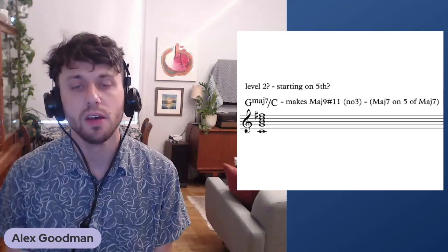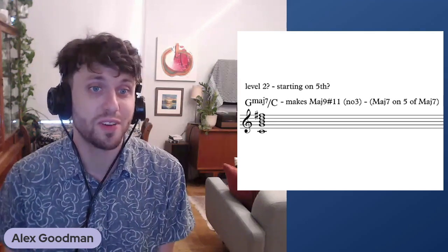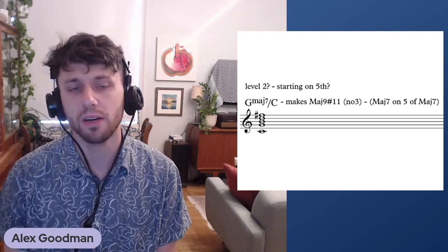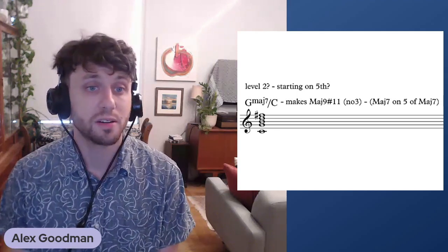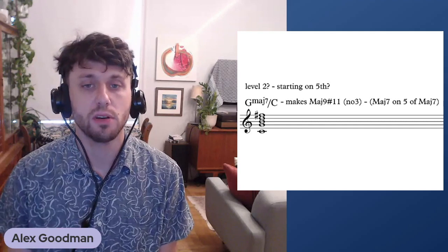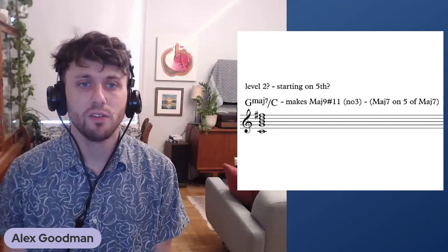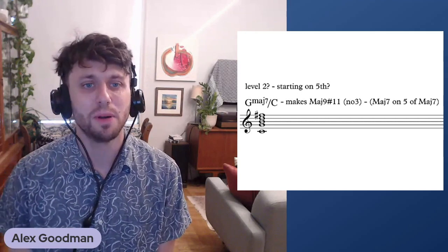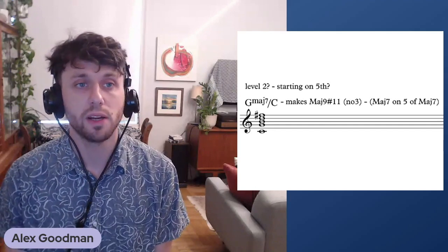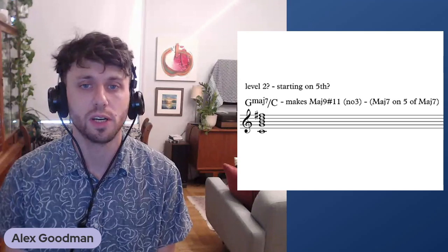Let's continue. Maybe a second level, we could start on the fifth: G major seven. Using major seven on the fifth is going to evoke this major nine sharp 11 with no three sound. All of a sudden, you're finding a way of using that same chord major seven, but implying a Lydian sound, if you just think of using it a fifth up or a fourth down.